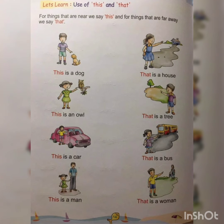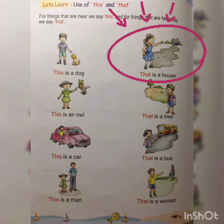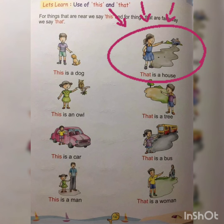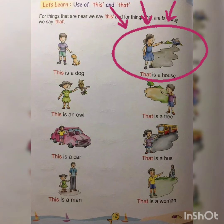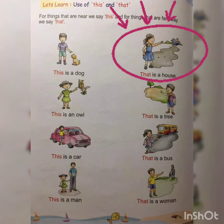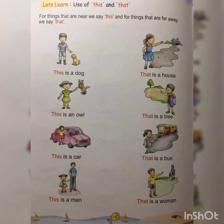Now, look at the second picture on the right. We can see a girl and a house. The house is far away from the girl. The girl is pointing at the house which is far away from her and she says that is a house. We use that in this sentence because the girl is standing far away from the house. It's very easy, right?